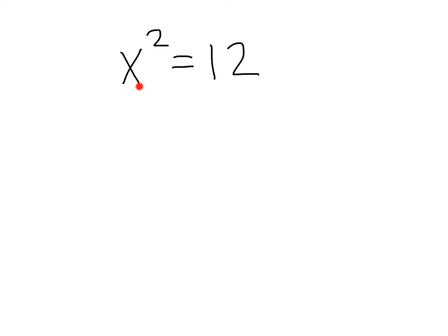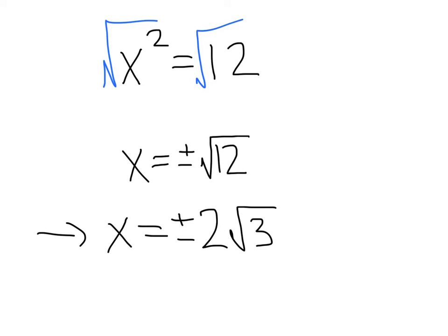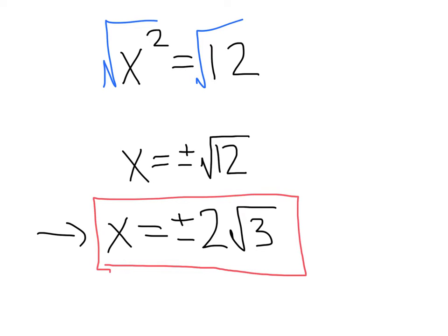Here we go — we've got x squared equals 12. First, our x squared term is already by itself. Then we take the square root of each side of the equation, giving us x equals plus or minus the square root of 12. Now we simplify, and we get x equals plus or minus 2 square root of 3.